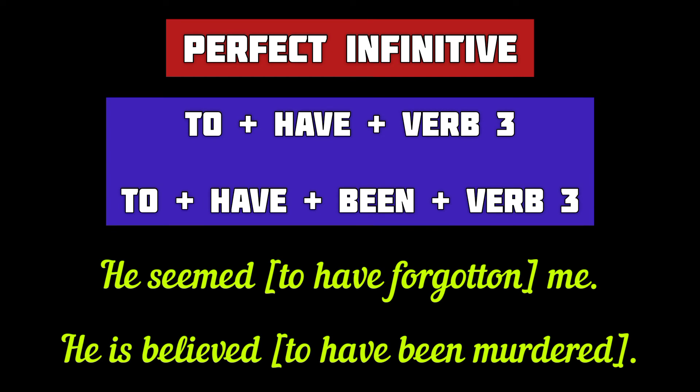What are perfect infinitives? Perfect infinitives refer to activities of the past time. For example: 'He seemed to have forgotten me.' Here 'to have forgotten me' is a perfect infinitive in active voice. 'He is believed to have been murdered.' 'To have been murdered' is a perfect infinitive in the passive voice. Both 'to have forgotten' and 'to have been murdered' refer to activities of the past.